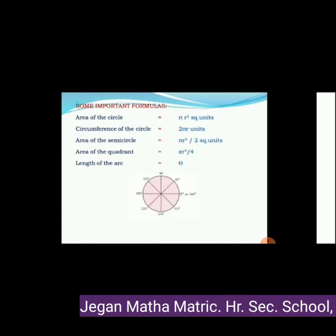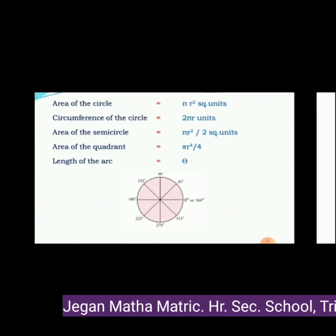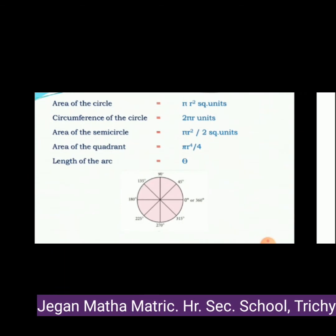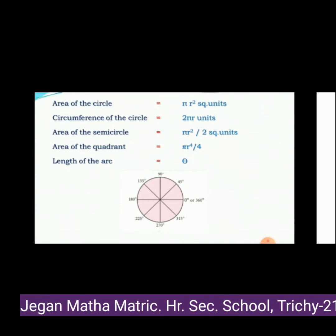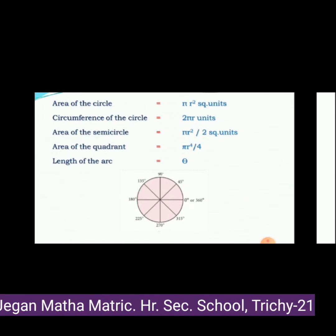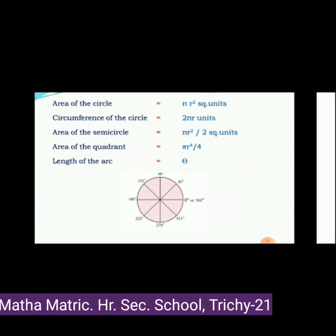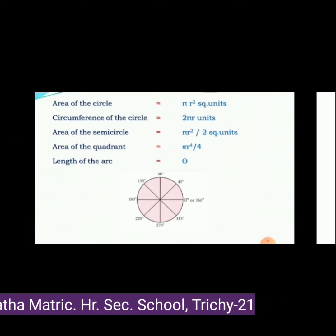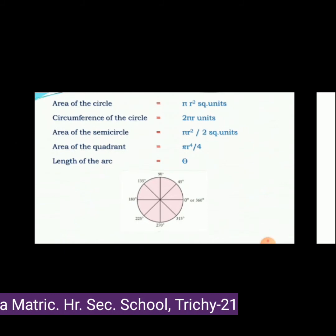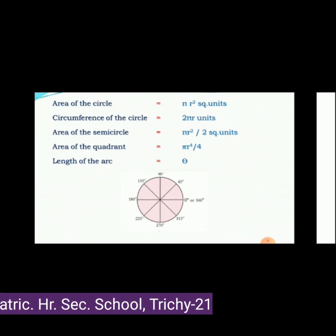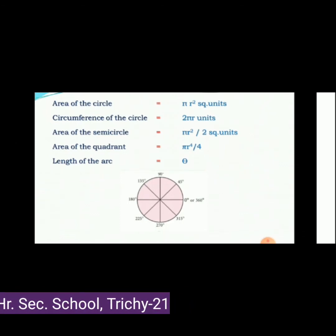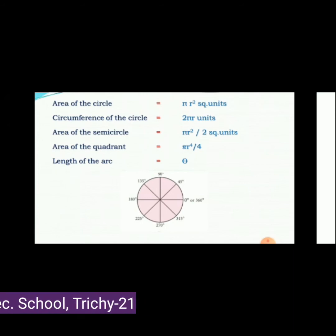Some important formulas in lesson 2: Area of a circle = π r² square units. Circumference of a circle = 2π r units. Area of a semicircle = π r² / 2 square units. Area of a quadrant = π r² / 4 square units. Length of an arc = θ / 360 × 2π r.